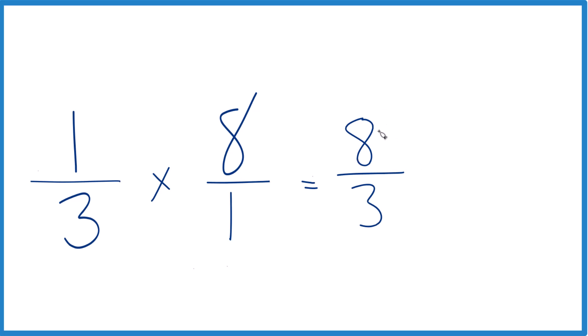This is an improper fraction because the numerator is larger than the denominator. We could change it to a mixed number. Three goes into eight, two times three would be six, and then we'd have two left over, bring the three across.